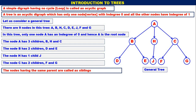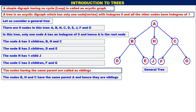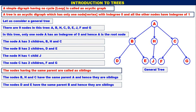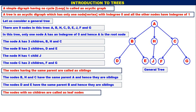The nodes having the same parent are called siblings. The nodes B, H, and C have the same parent A and hence they are siblings. The nodes D and E have the same parent B and hence they are siblings. The nodes with no children are called leaf nodes. Nodes D, E, J, F, and G do not have any children, therefore they are leaf nodes.